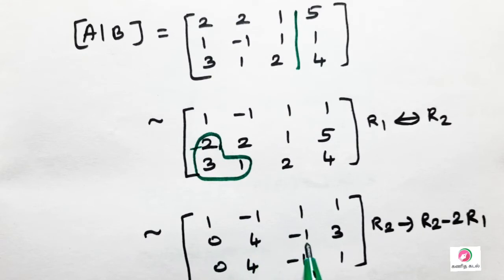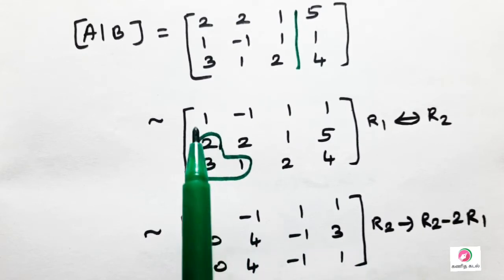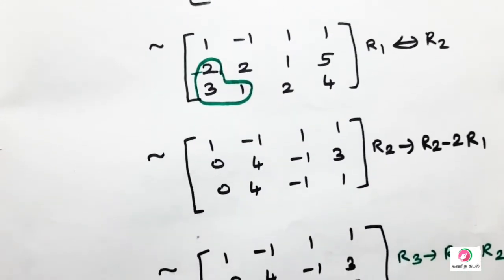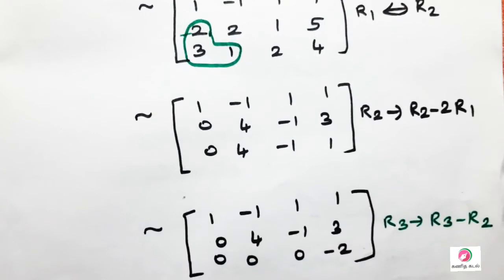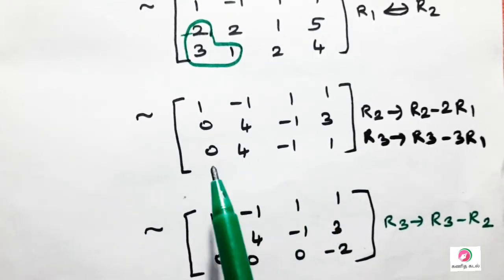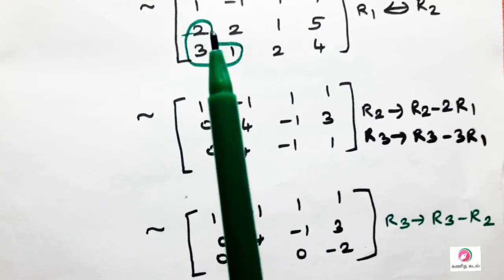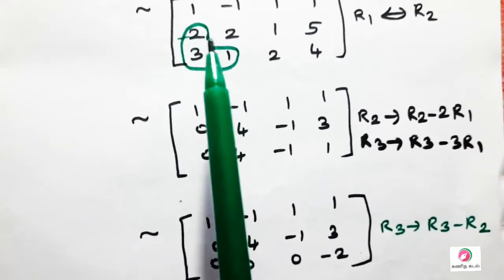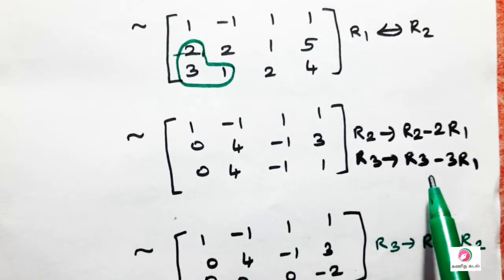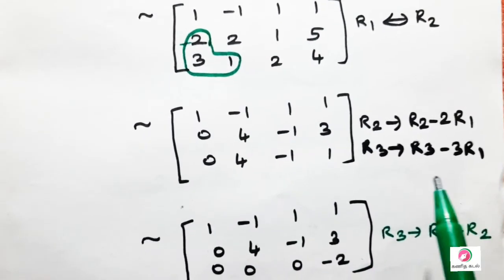So we multiply by 3 and do R3 tends to R3 minus 3R1.